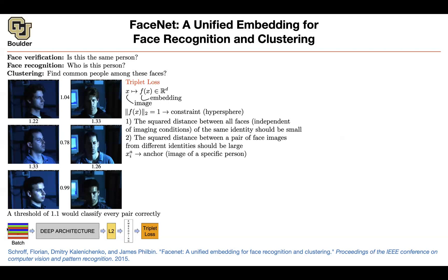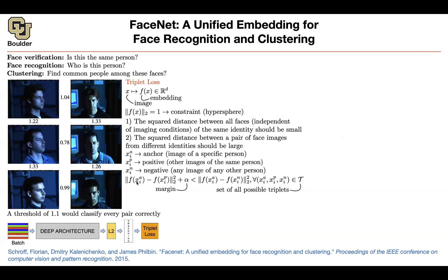You pick an anchor — an image of a specific person. You then pick another image of the same person, perhaps under different lighting, as your positive case. A negative case is any image of a different person. You want the positive case to be close to the anchor and the negative case to be further away. This is called a triplet loss because you have a triplet: anchor, positive, and negative.